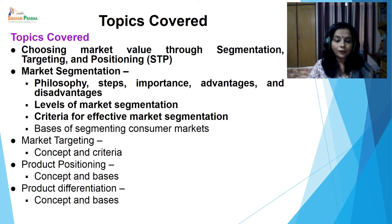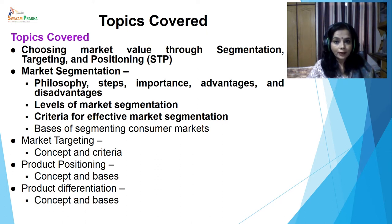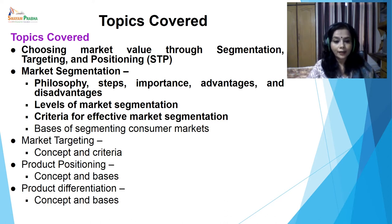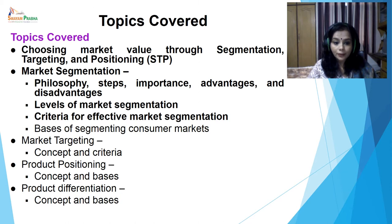In this module, we will discuss the following topics: Choosing Market Value through Segmentation, Targeting and Positioning, known as STP. Market Segmentation — Philosophy, Steps, Importance, Advantages and Disadvantages. Levels of Market Segmentation. Criteria for Effective Market Segmentation. Basis of Segmenting Consumer Markets. Then Market Targeting — Concept and Criteria. Product Positioning — Concept and Basis. And finally, Product Differentiation — Concept and Basis.